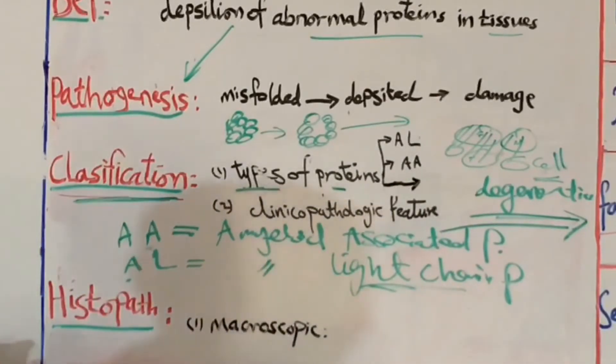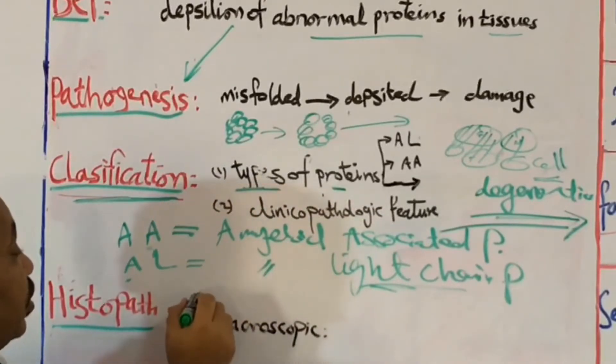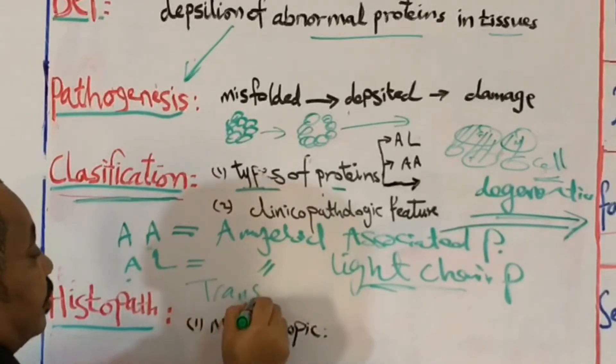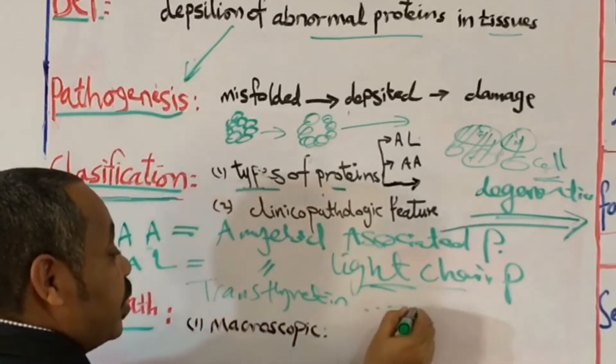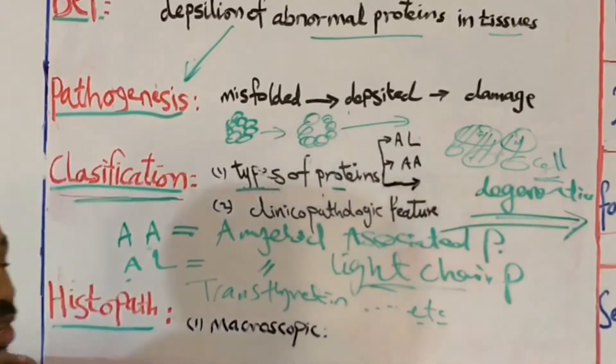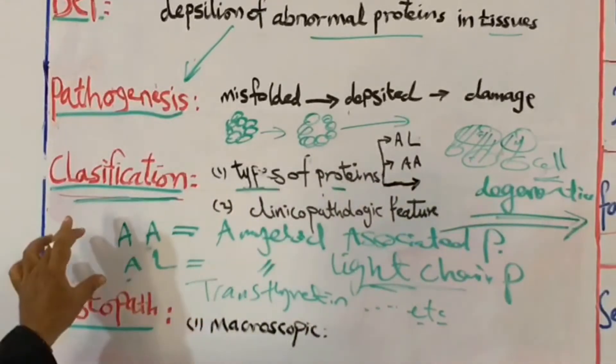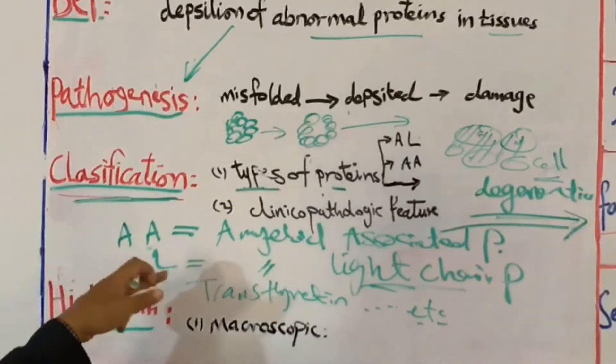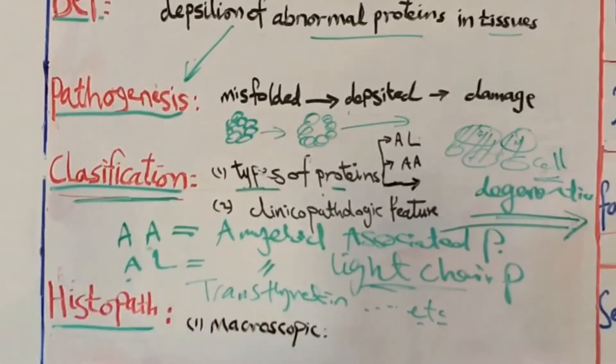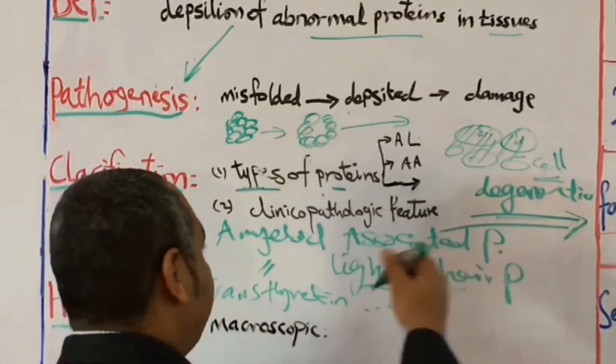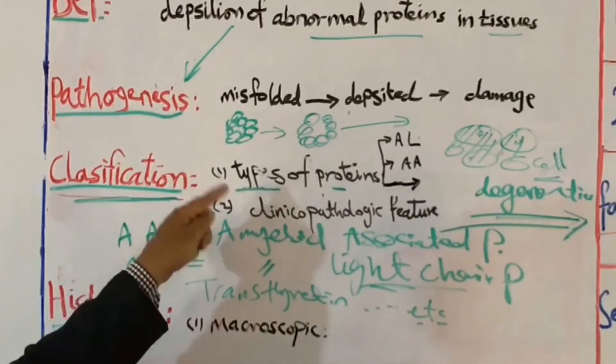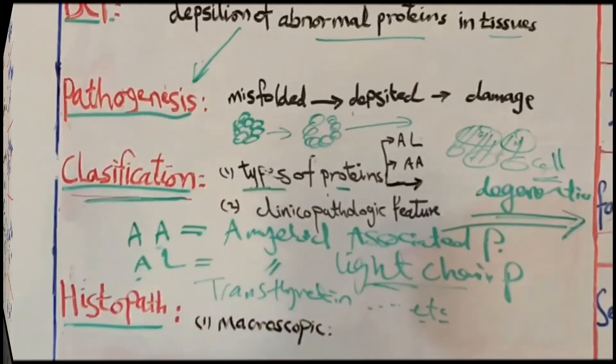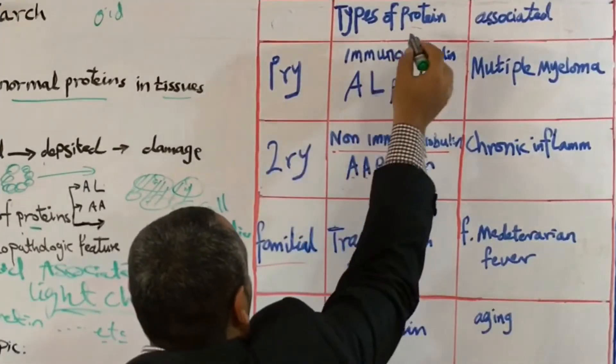There is another type of protein which is deposited in this type of disease, which is called transthyretin. And also there are other types of these proteins. But to make life easy for you, let us talk about only these three types. So actually, according to these points, I mean type of proteins and the clinicopathological feature of the disease, we can classify or categorize this amyloidosis.